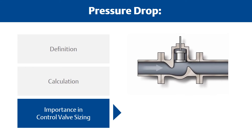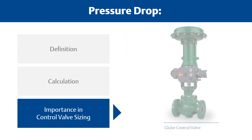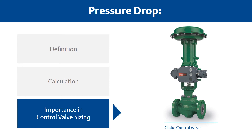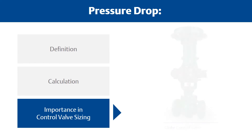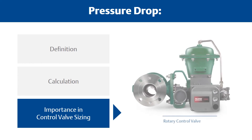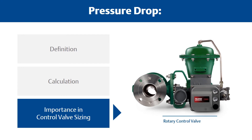The maximum pressure drop a control valve can tolerate at shutoff or when partially or fully open is an important selection criteria. Globe control valves are generally superior in both regards because of the rugged nature of their moving parts. Many rotary control valves are limited to pressure drops well below the body pressure rating, especially under flowing conditions, due to the stresses that high-velocity flow imposes on the disc or ball segment.